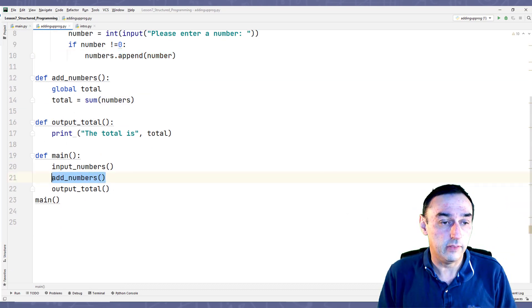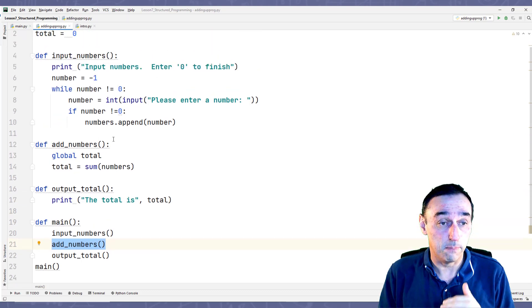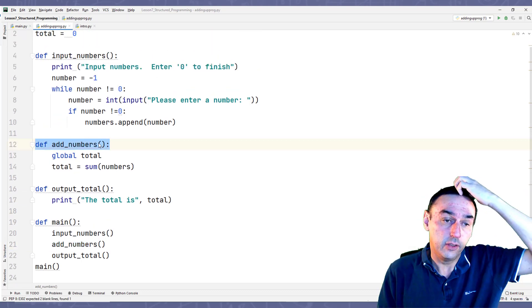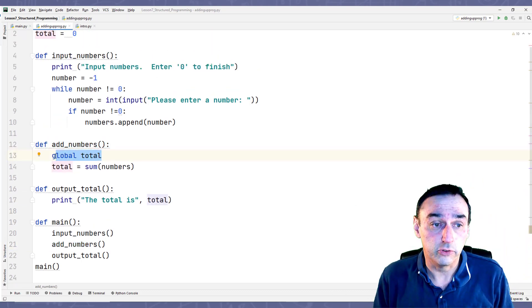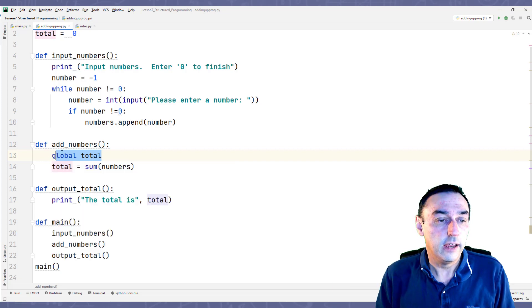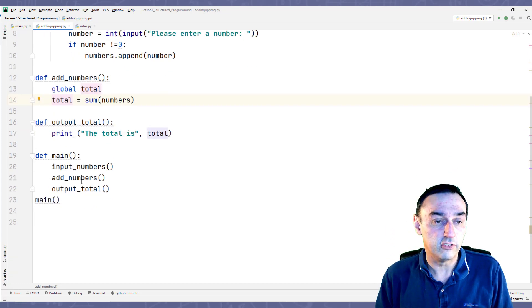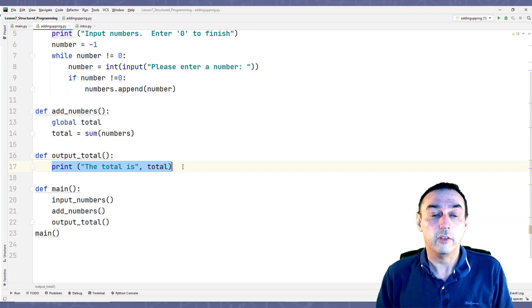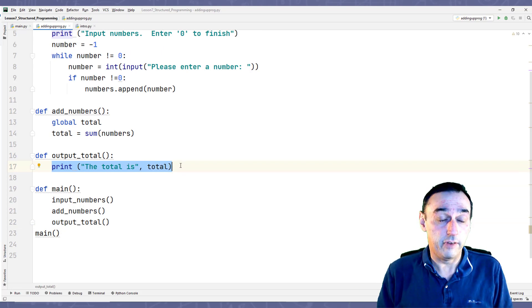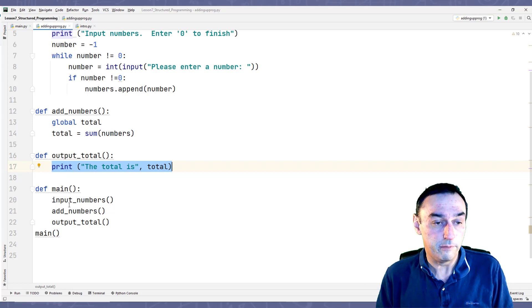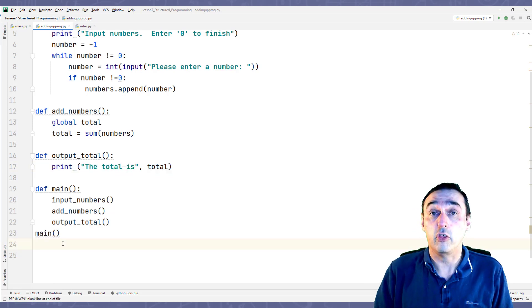And so it comes down here. This will then run add_numbers, which goes back up here into add_numbers. We use the global variable total, remember global variables, and we then set total to the sum of the numbers in the list. We then finish this function, come back down here. This outputs the total. This will then print the total, the variable, the content of the variable total to the screen. And then we finish this function, which then finishes the program.